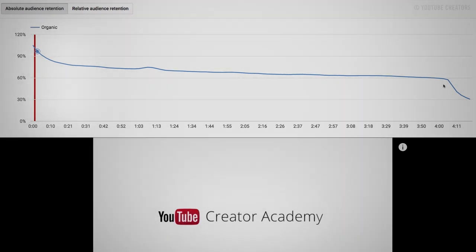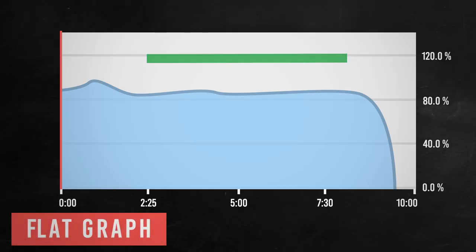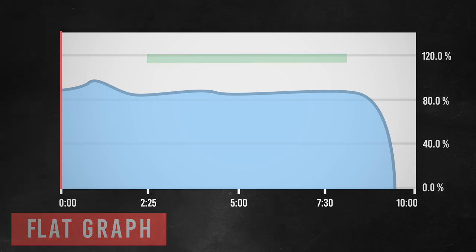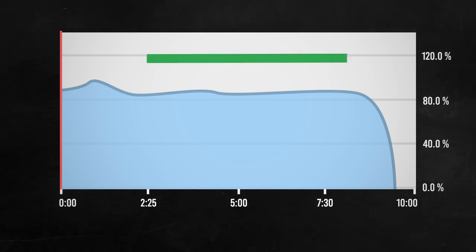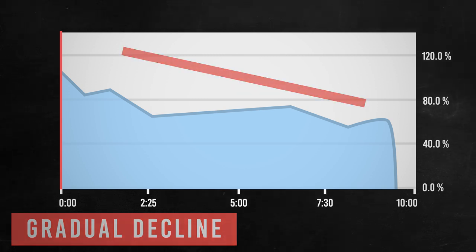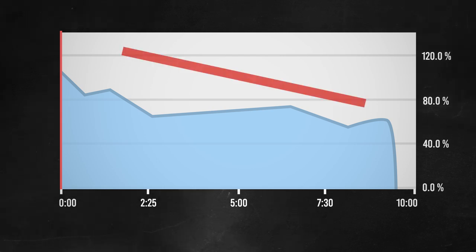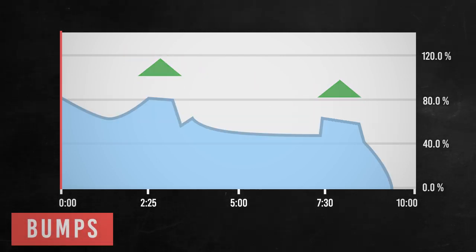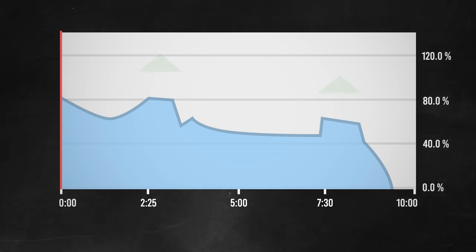Check out these graphs to understand more about audience retention. In this graph, you can see there is a flat graph — this is actually good. It means that people are constantly watching the scenes of your videos, which means you did a good job capturing your audience's curiosity and interest. On the second graph, you can see a gradual decline, which is something you need to take seriously because it means your audience is slowly losing interest. On this graph, you can see there are bumps, which mean that people like that part of your video. It can also mean that they have shared this part of your video as well, so keep it up!